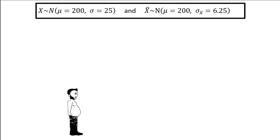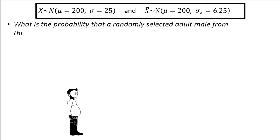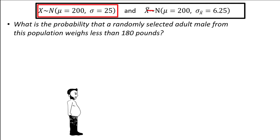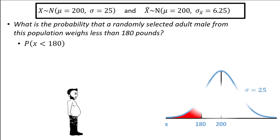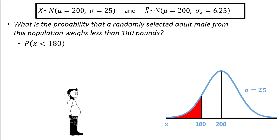Now let's answer a few questions. What is the probability that a randomly selected adult male from this population weighs less than 180 pounds? Since we are asked about a single observation, we turn to the distribution of x and not x-bar. The probability statement is the probability x is less than 180. On the graph, we need to find the area on the curve less than 180, which I've shaded in red.